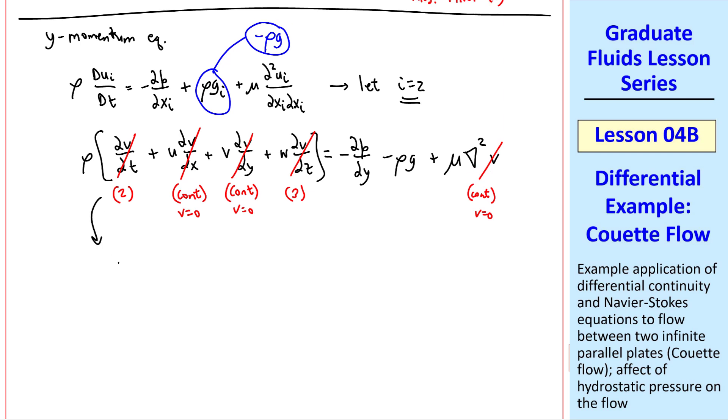The flow is steady, which was assumption two. V was not a function of x by our continuity equation. In fact, v equals zero. And this term goes away by approximation three. So this equation reduces to del p del y equal minus rho g. But we make a similar argument as we did above. Namely, p is not a function of x, z, or time t. Therefore, p is at most a function of y.